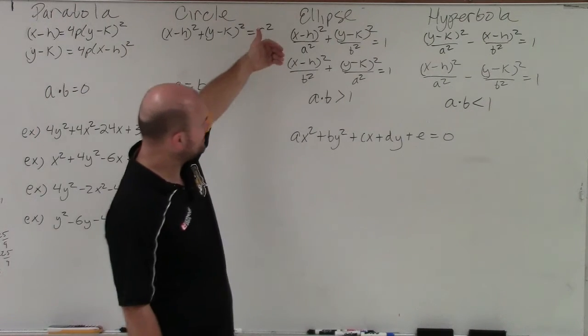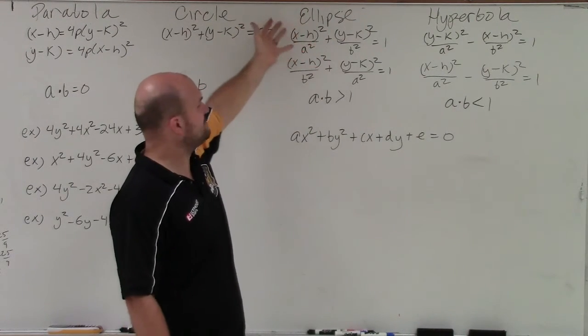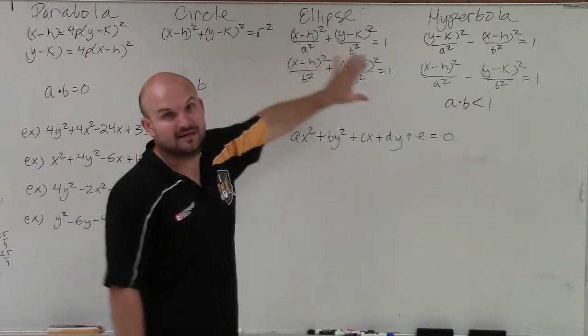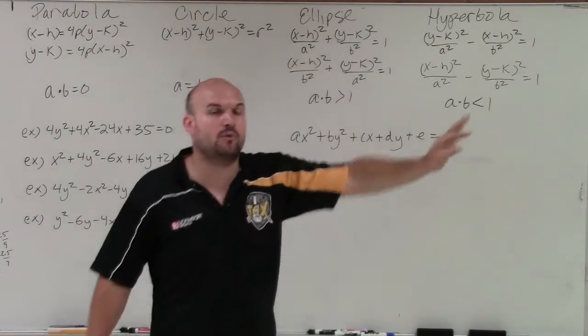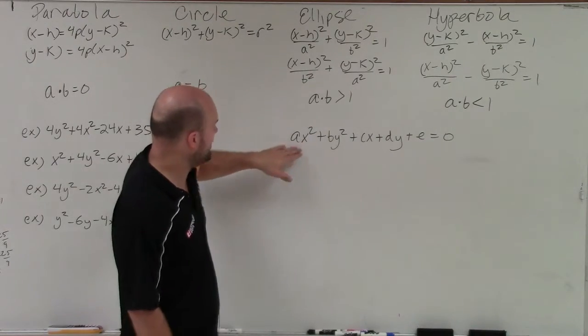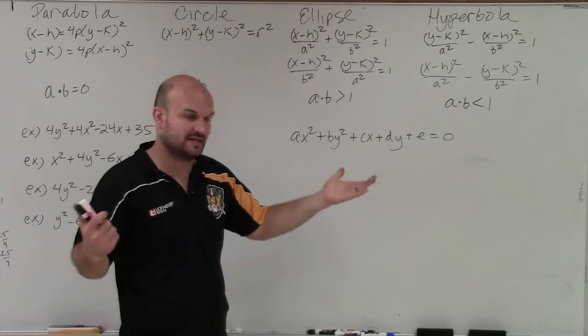For an ellipse, the main thing I look at is noticing the difference between the ellipse is, no matter what expansion of my x and my y, it's always adding. That means I'm always going to have a positive coefficient for x and a positive coefficient for y. So an ellipse, if you multiply your a times b and it's greater than 1, two positives multiplied together is always going to give you a positive.